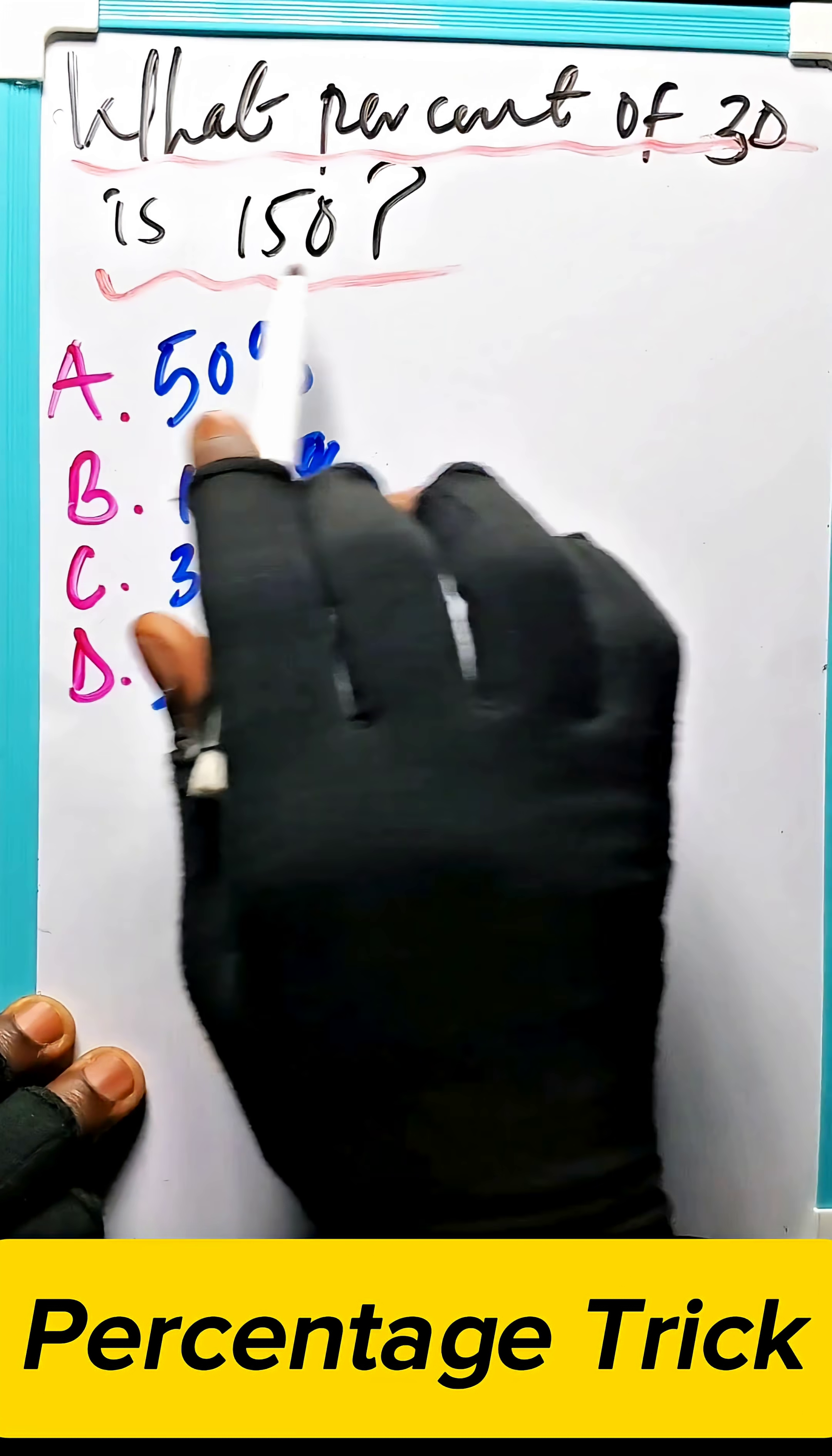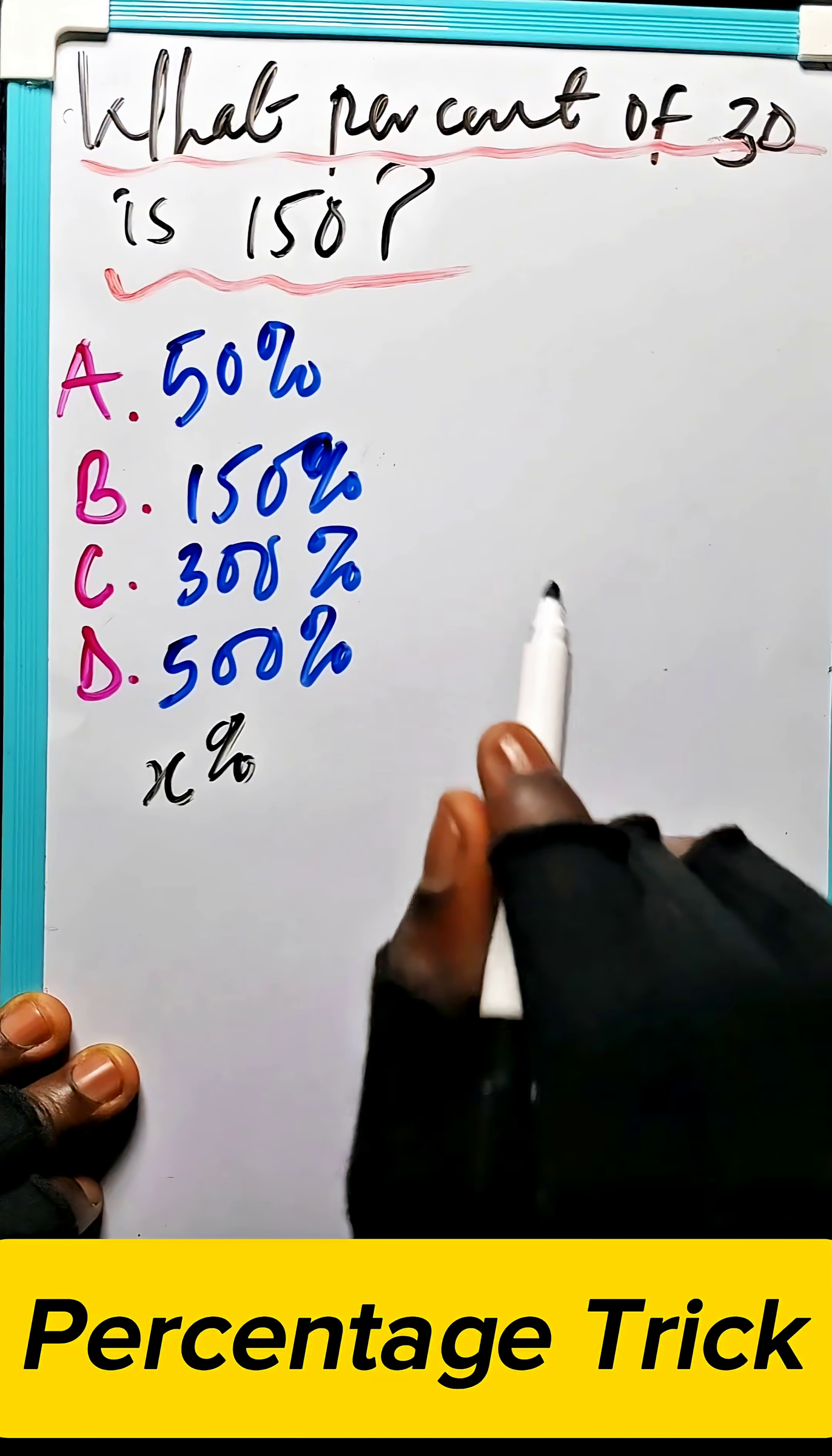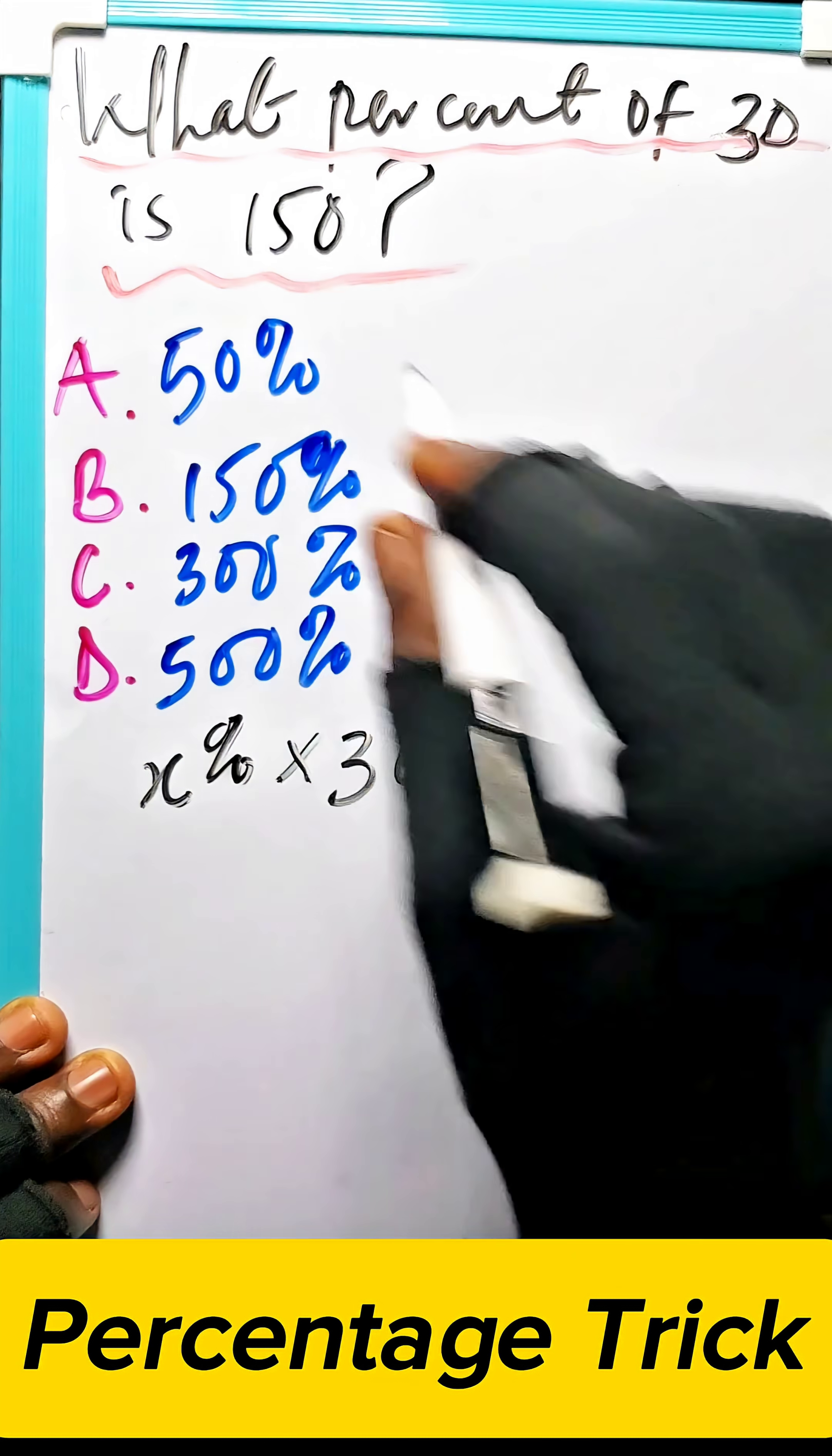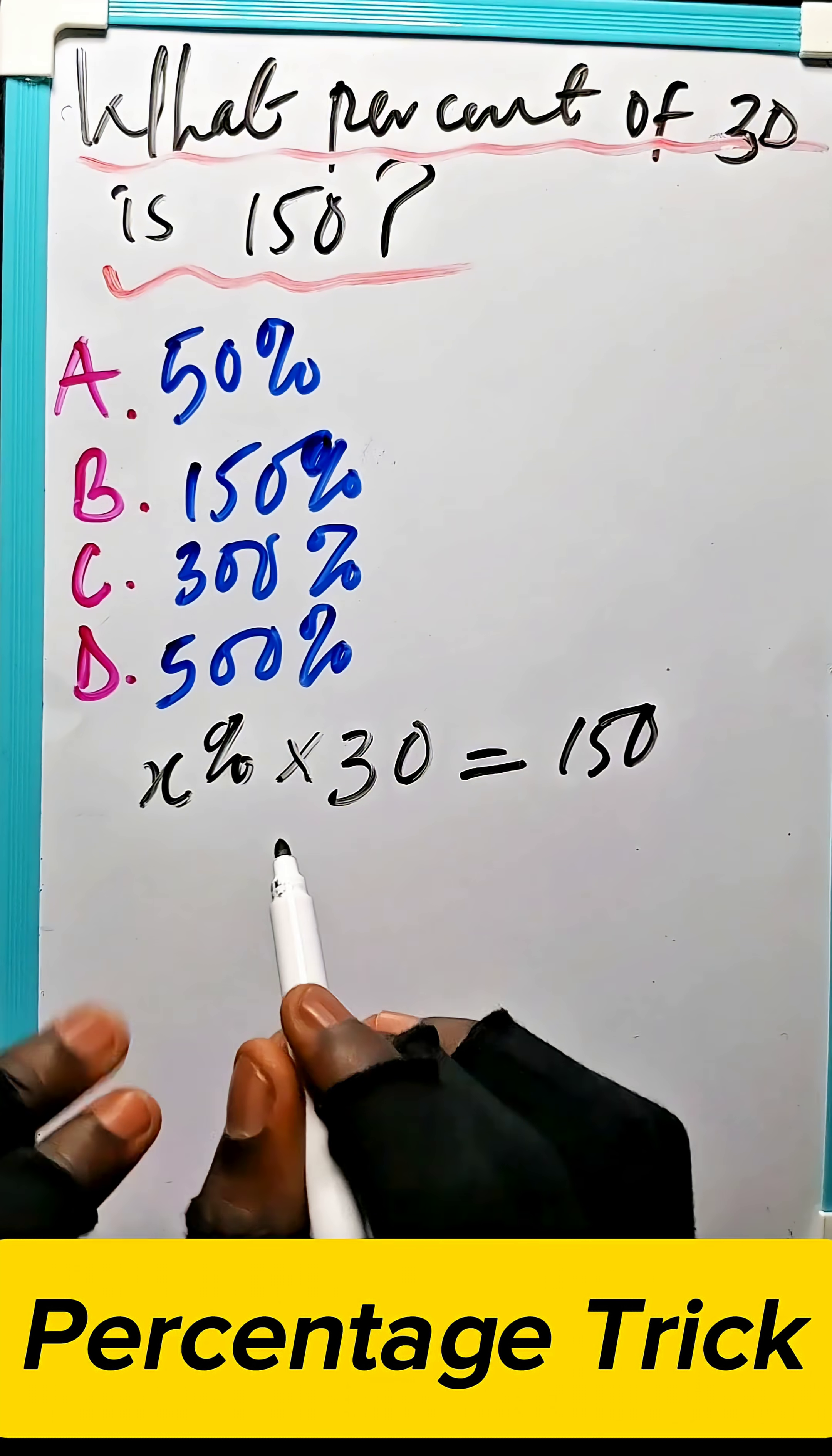What percent of 30 is 150? That is x. You don't know. Percent, that is percentage, of multiplication 30. The red 30 is equal to 150.